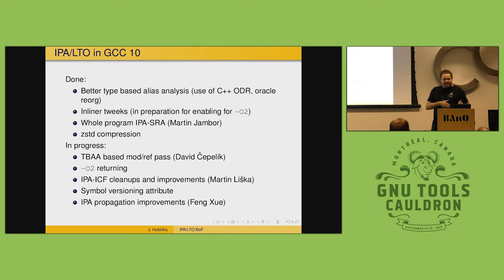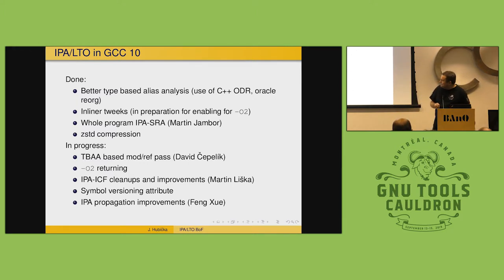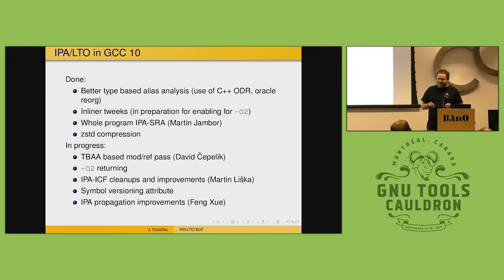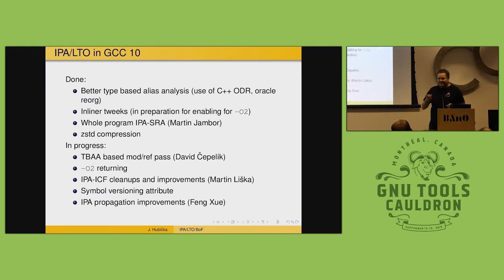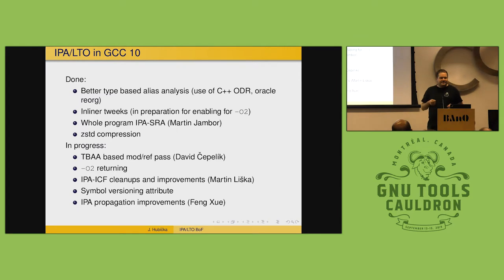The last bottleneck is streaming types and declarations, which is slowly improving because we stream less. At some point we will probably need to parallelize it, which is an interesting problem by itself. There is also a symbol versioning attribute we need to enable for a few more packages, and nice work from a Chinese group on IPA propagation, which I hope will also improve the inliner heuristic and reduce binary size growth.